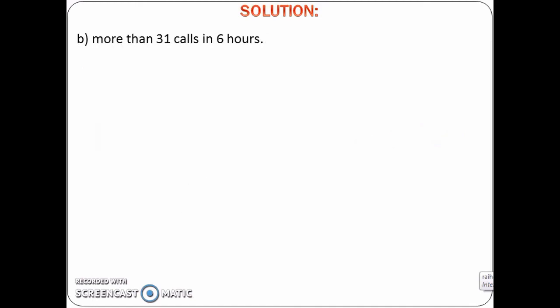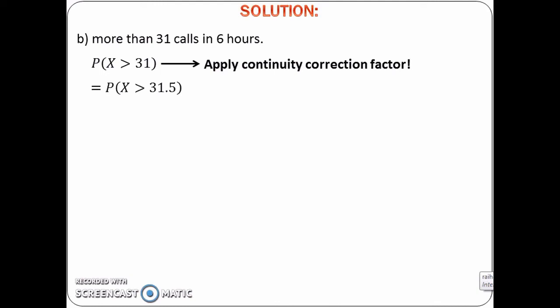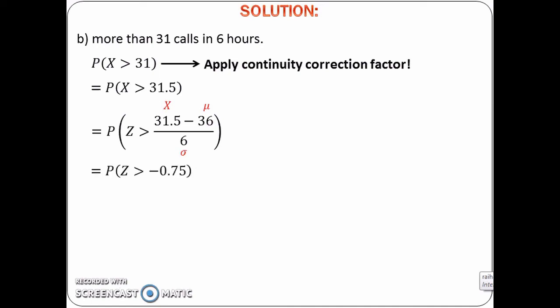The probability of receiving more than 31 calls in 6 hours is probability of x greater than 31. Because we have changed the Poisson distribution to normal distribution, we must apply the continuity correction factor. The probability that we want to find now becomes probability of x greater than 31.5. To find this, change the normal distribution to standard normal distribution using (x minus mu) over sigma. We get probability of z greater than negative 0.75.